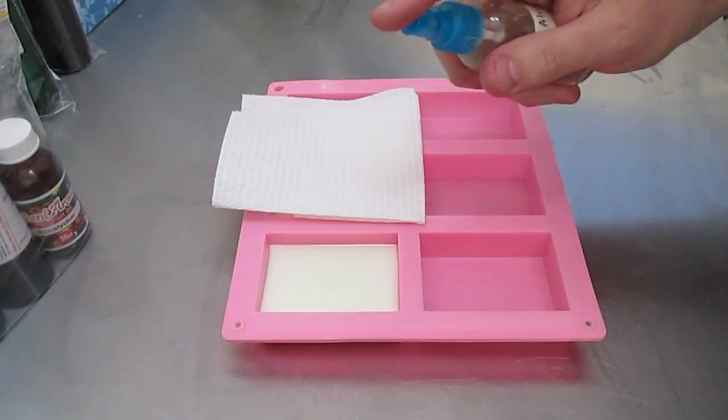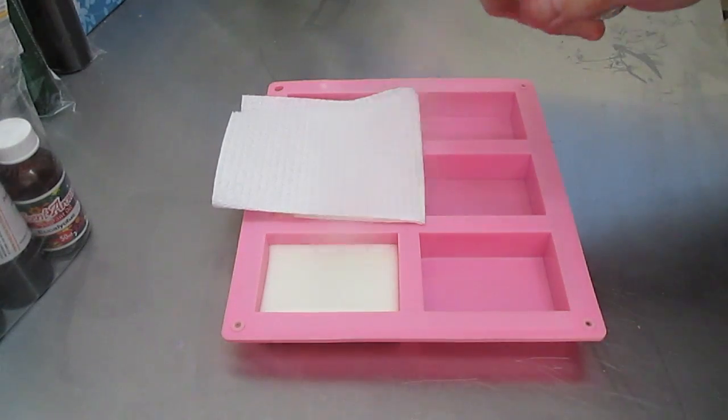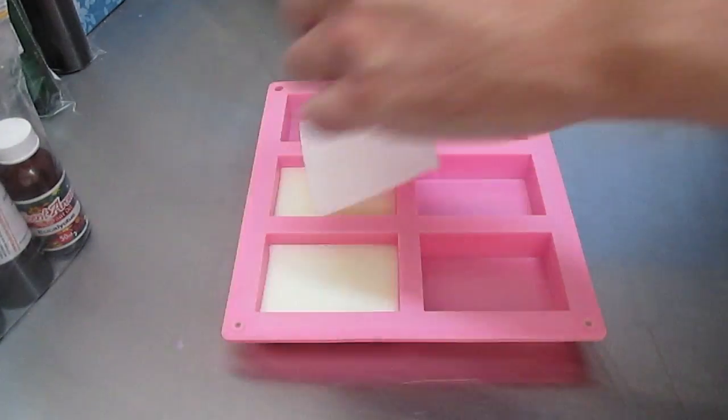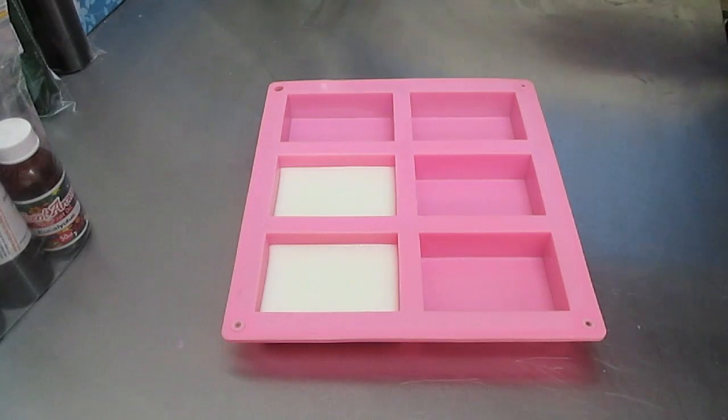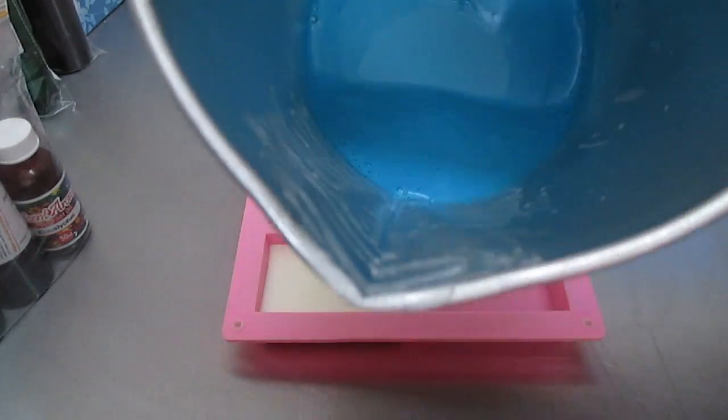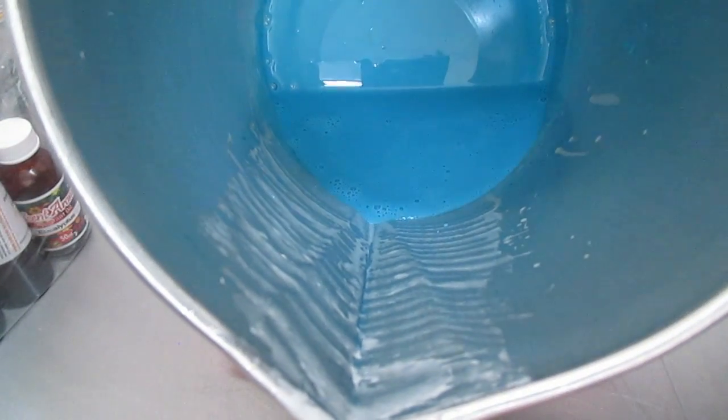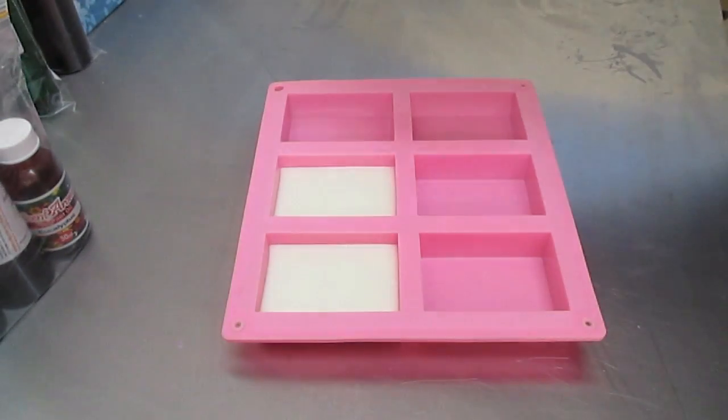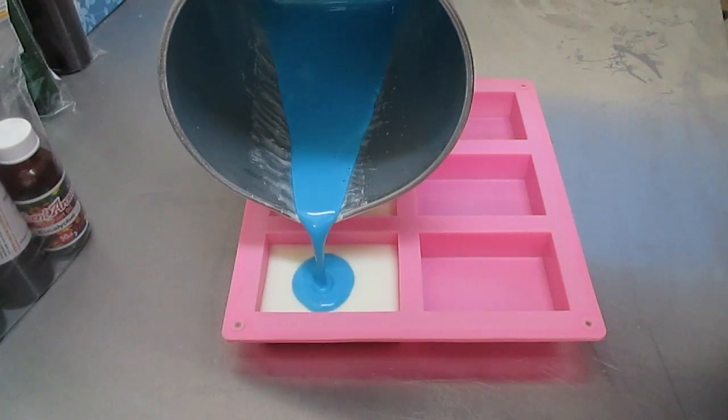So I just get my bottle of rubbing alcohol and I just spray it, so the other one's not wet at all. Now I'm not going to spray this to get rid of all the bubbles in here, but for this example I'm not going to do that. So I'm just going to pour this in.